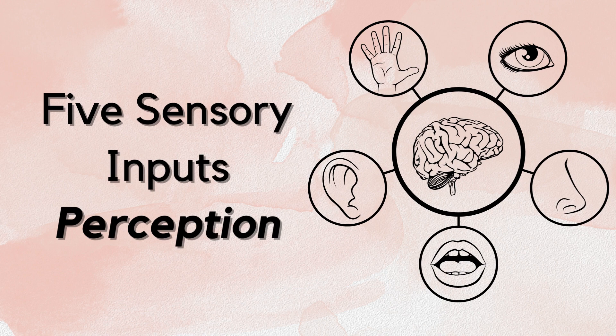Think about when you look at something like a beautiful flower. Perception is what allows you to see the colors, shapes and details of a flower. It is like a superpower that helps you recognize and understand what you are seeing.